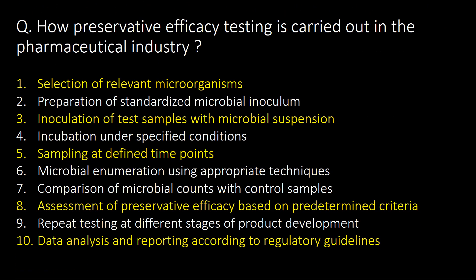How is preservative efficacy testing carried out in the pharmaceutical industry? The 10 important steps of preservative efficacy testing majorly include: selection of relevant microorganisms, inoculation of test samples with microbial suspension, sampling at defined time points, assessment of preservative efficacy based on predetermined acceptance criteria, and data analysis and reporting according to regulatory guidelines.